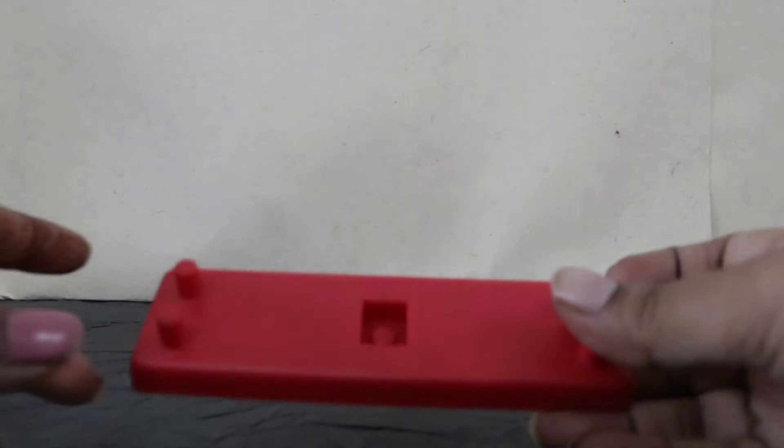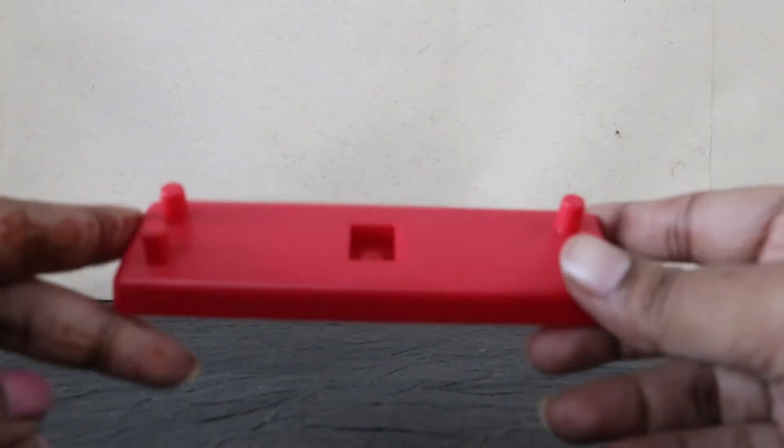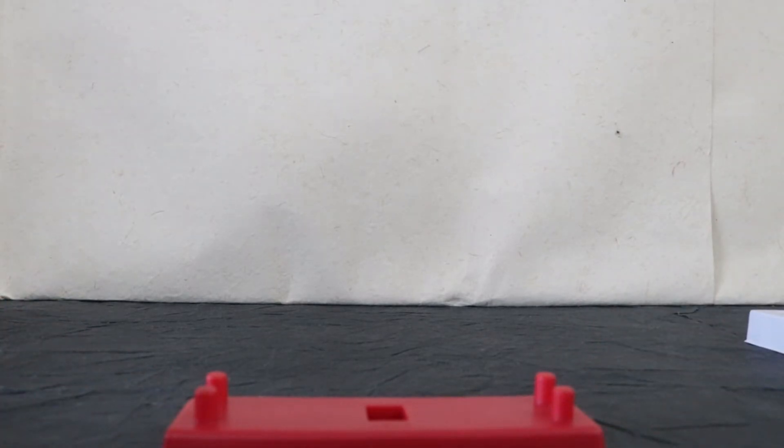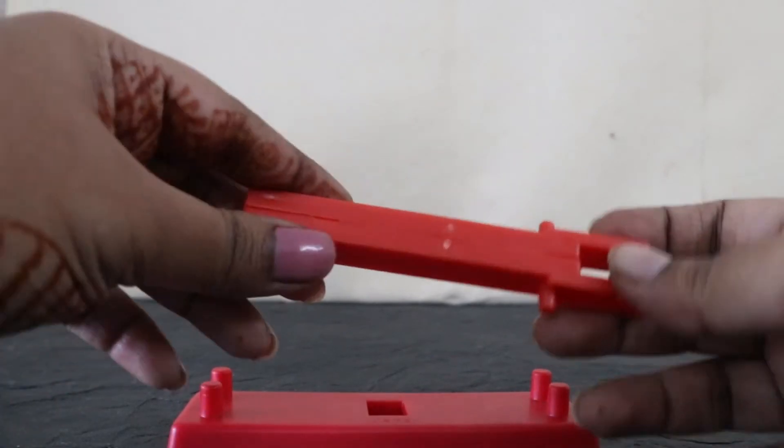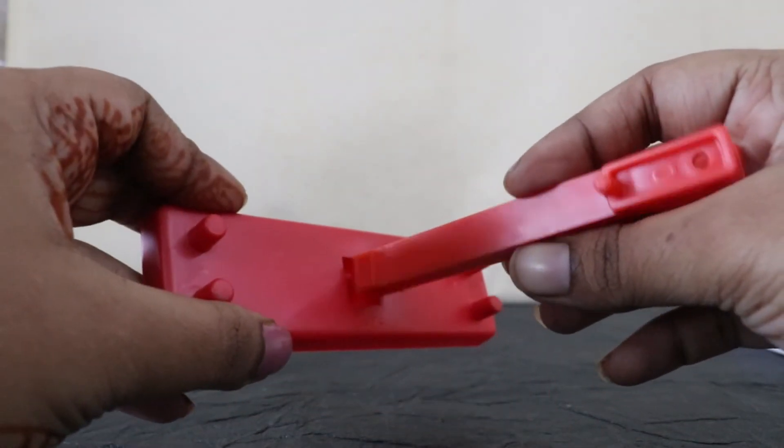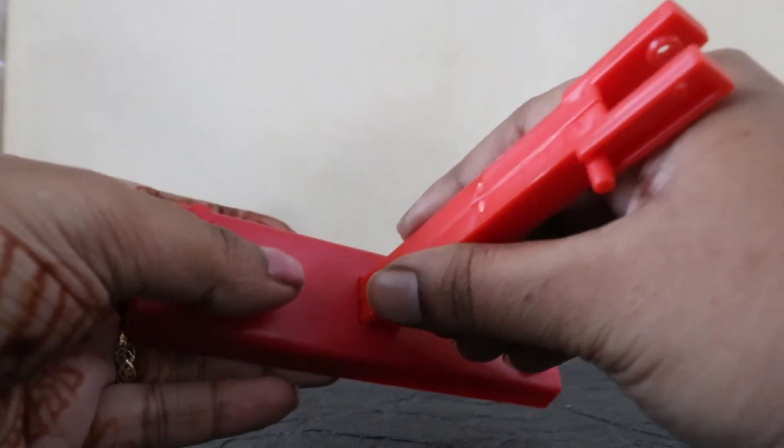Here I take the base. As you can see there is a square shaped socket on it. Now I take the vertical rod and I have to fix this vertical rod in the square shaped socket. Make sure that you fix it tightly.